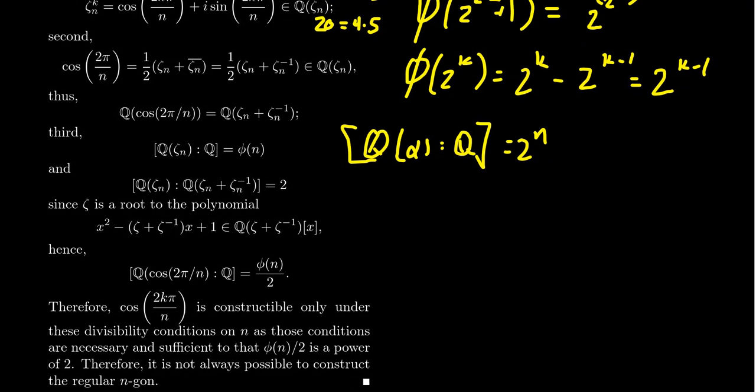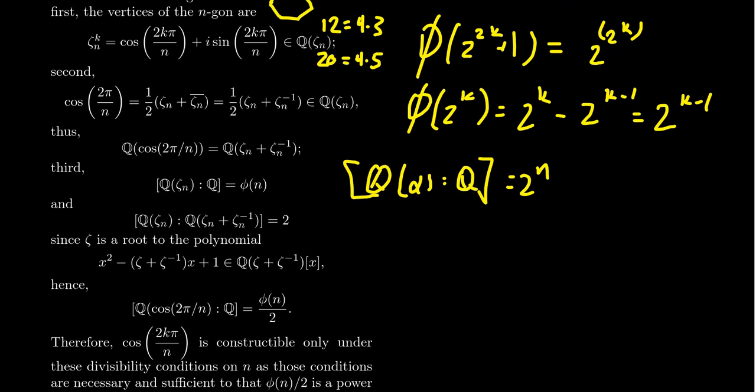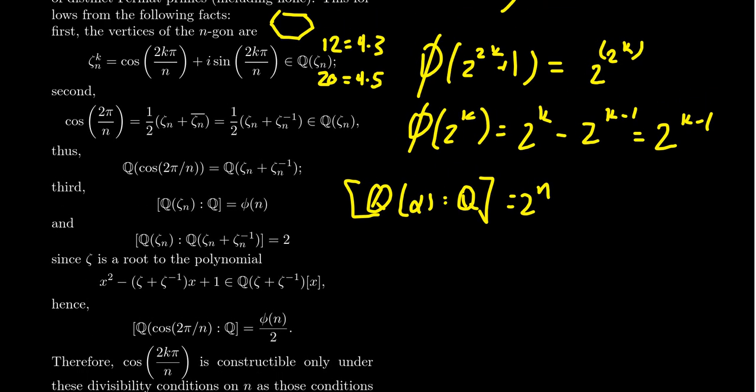Returning to the mathematics, if we were to construct the regular n-gon, we need phi of n to be a power of 2 because this boils down to being able to construct cosine of 2 pi over n. Note that cosine of 2 pi over n is the same thing as one-half, a primitive complex root of unity plus its conjugate, which is also the same thing as its inverse. So cosine of 2 pi over n belongs to this field.